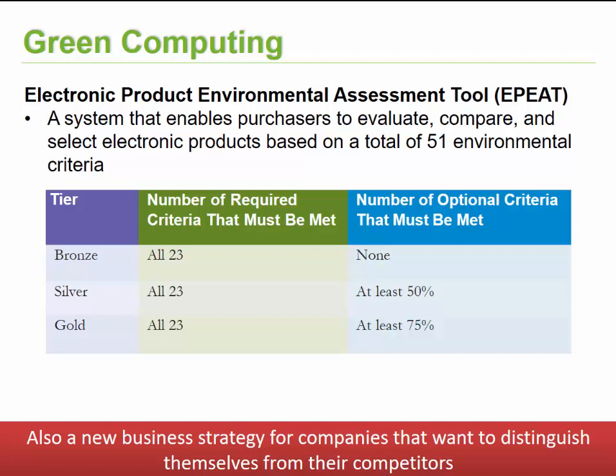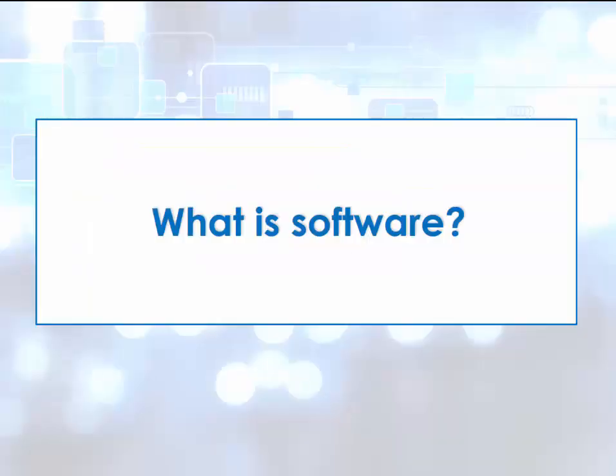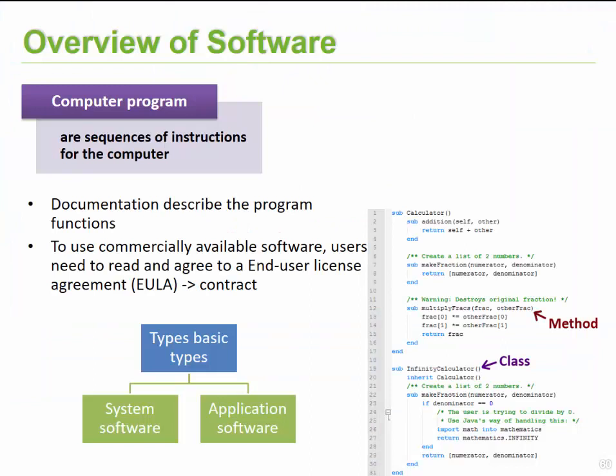Software can be defined as a computer program, which relates to a sequence of instructions that the computer needs to execute in order to achieve a specific goal. Thinking back to the hardware section, we work with a machine cycle that executes instructions — a program works on the same principle: a combination of hundreds of thousands of instructions to achieve a specific goal. Whenever you have programs or applications, you generally need documentation that describes the functionality of that program.